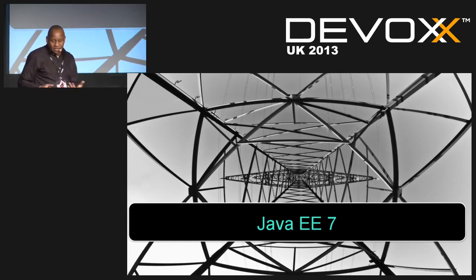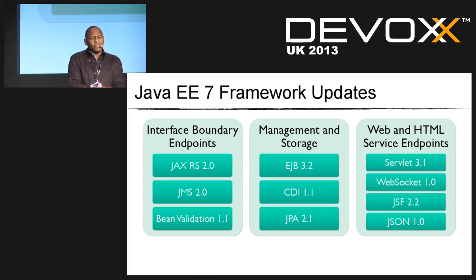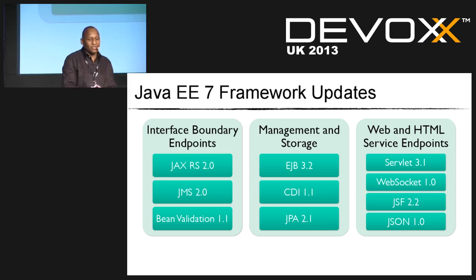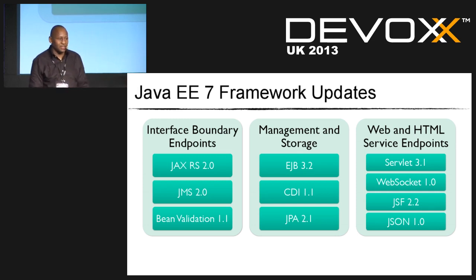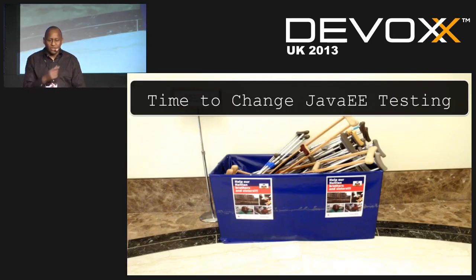Java EE7 is going to be releasing in Q2 — we're almost in Q2 of 2013, so maybe July or August, provided they get all the specs. In Java EE7 we'll have Contexts and Dependency Injection 1.1, EJB 3.2, WebSockets for the first time, updates to JAX-RS, batch, and of course JSF and JSON.